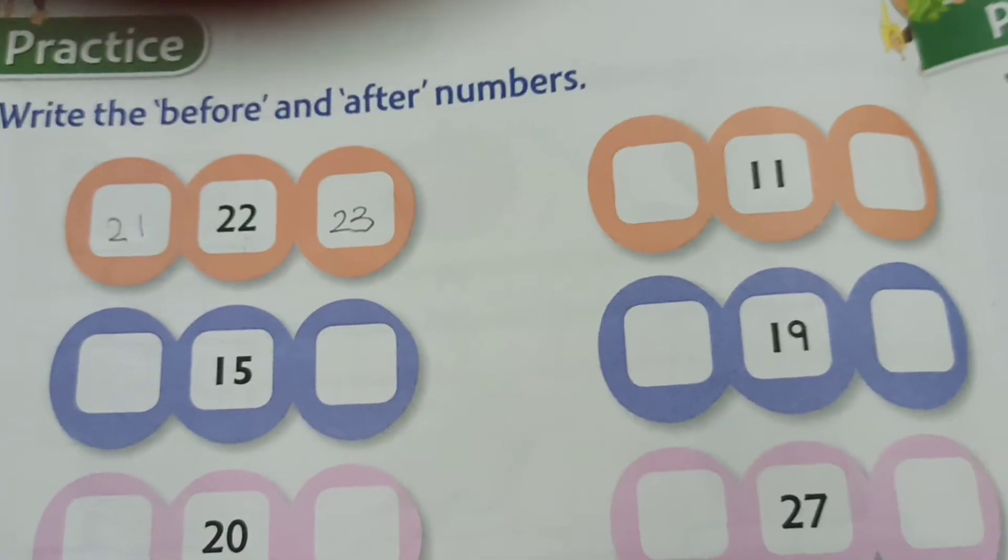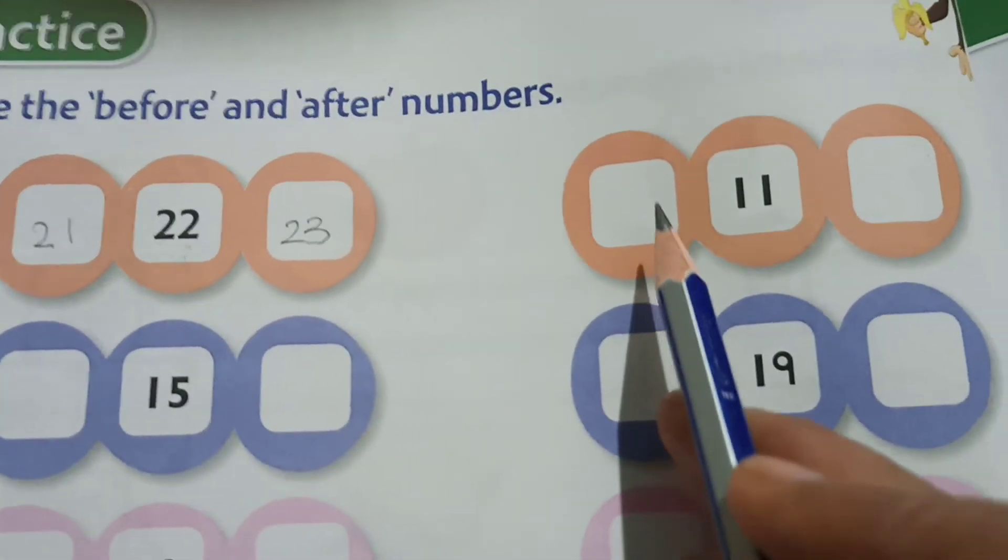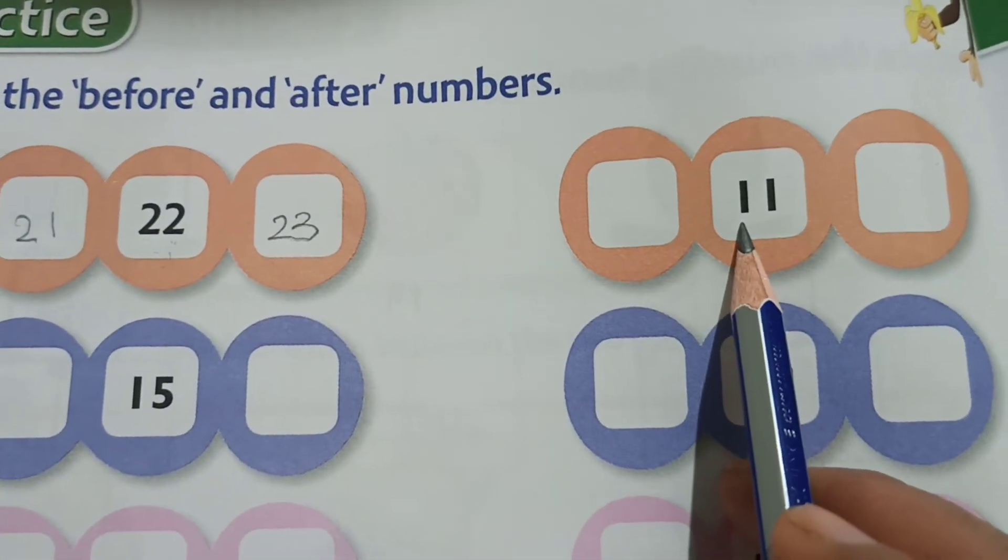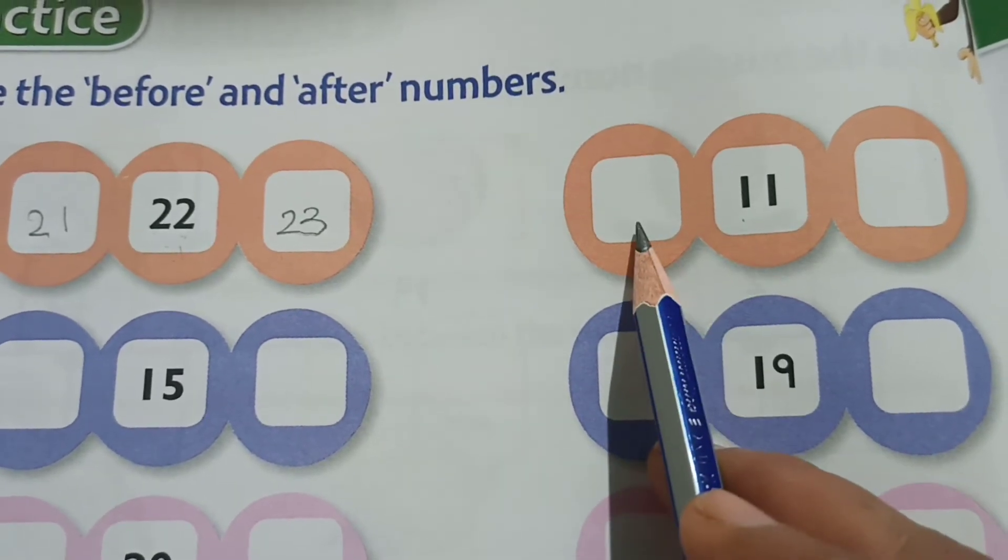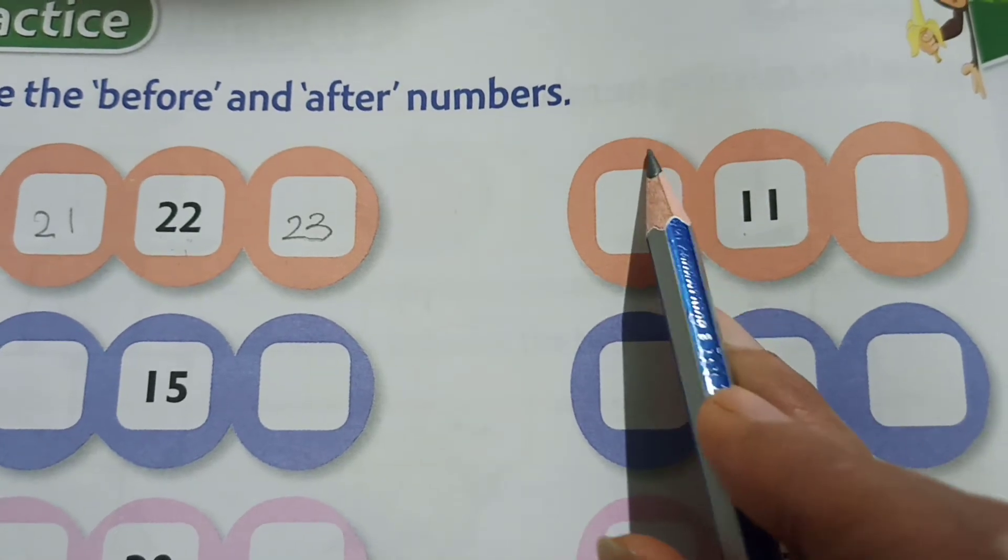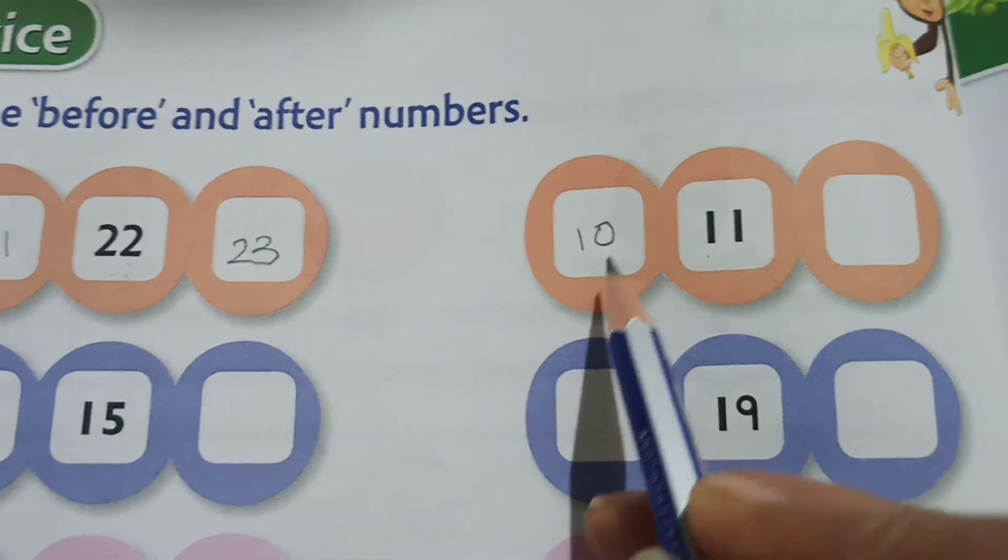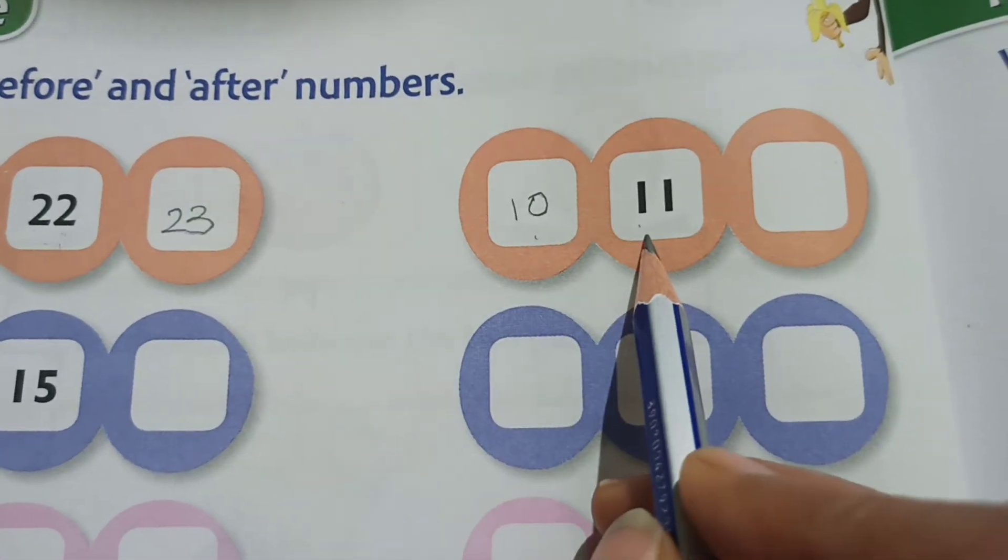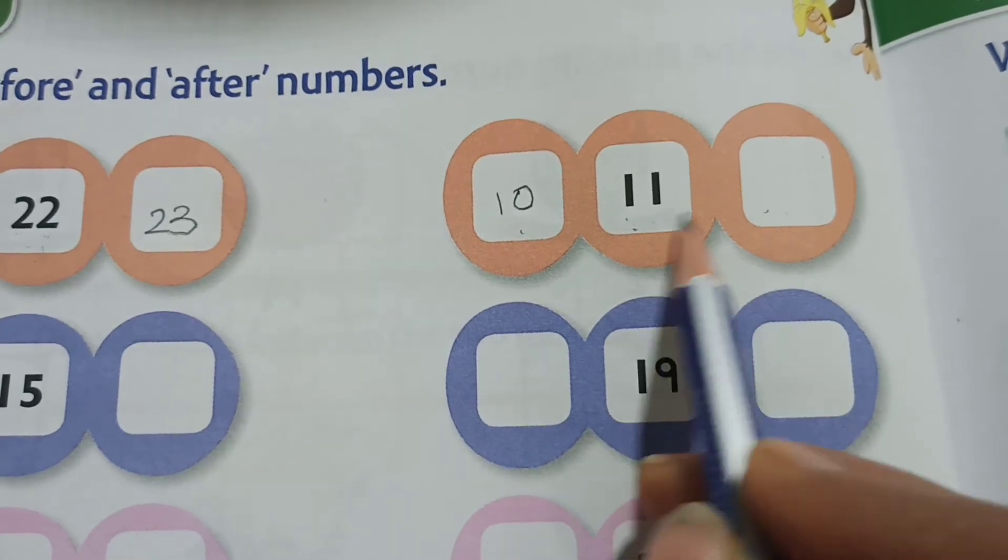Here you can see twenty-one, twenty-two. And what comes after twenty-two? Twenty-three. After twenty-two comes twenty-three. So let us find out the next one. I will do here. Now, what is the number here? Eleven. So what is the number before eleven? What comes before eleven?